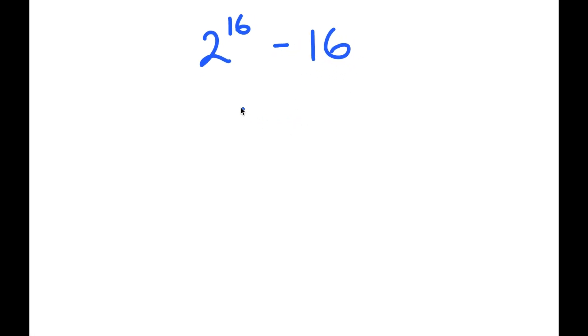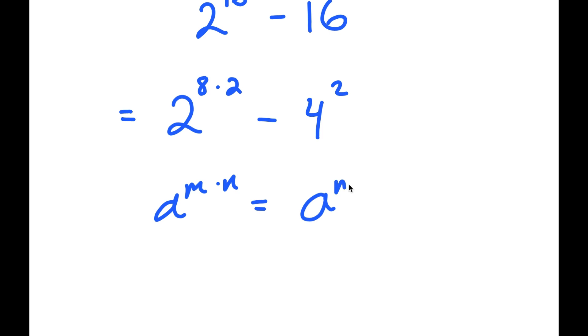So to solve this, I'm going to rewrite this as 2 to the power of 8 times 2 minus 4 to the power of 2. And if I have something of the form a to the power of m times n, this is equal to a to the power of m to the power of n.